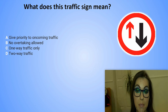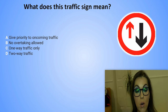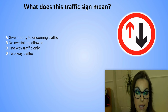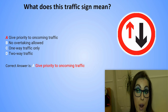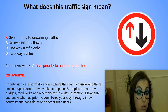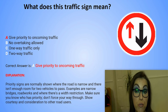What does this sign mean? A. Give priority to oncoming traffic. B. No overtaking allowed. C. One-way traffic only. D. Two-way traffic. The correct answer is A. Give priority to oncoming traffic. Explanation: Priority signs are normally shown where the road is narrow and there isn't enough room for two vehicles to pass — for example, narrow bridges, roadworks, and where there is a width restriction. Make sure you know who has priority. Don't force your way through. Show courtesy and consideration to other road users.